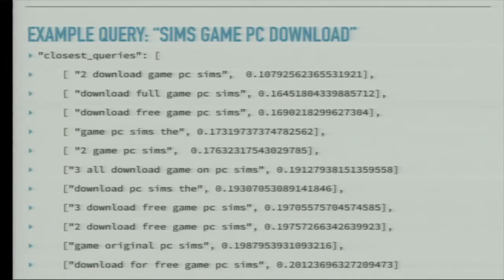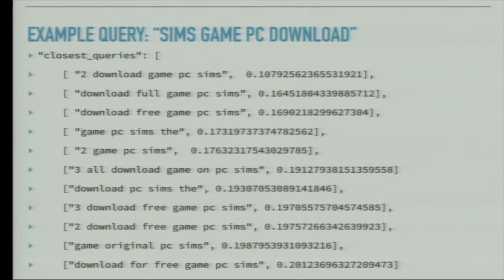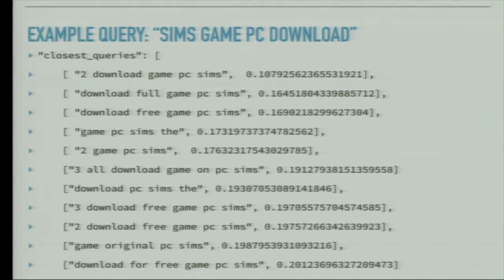A simple example: a user types the query 'sims game pc download'. Our system returns a sorted list of queries along with their cosine distances to that query vector. The closest result is 'download game pc sims' — this comes from our search backend which uses a bag-of-words approach to optimize space, so the vector turns out to be the same. As the cosine distance increases moving down the list, results get further away. We are typically concerned with the top 50 closest queries that come through this system.